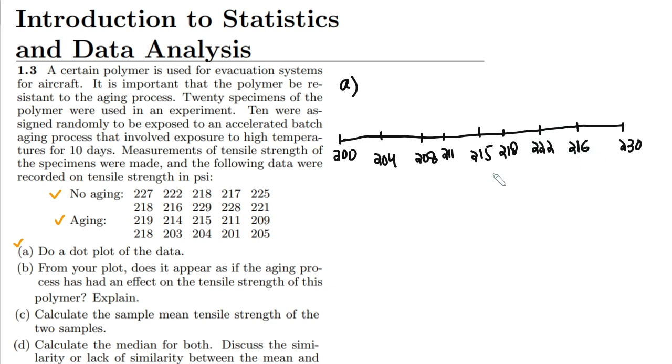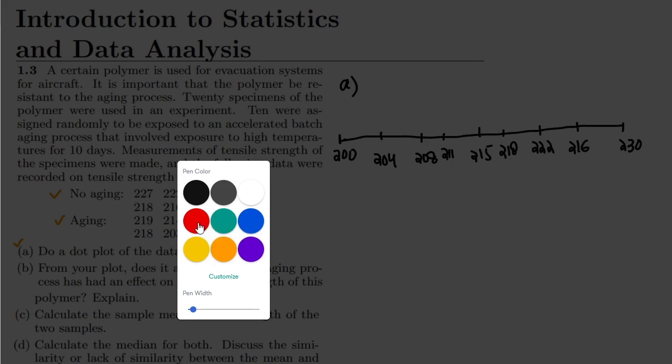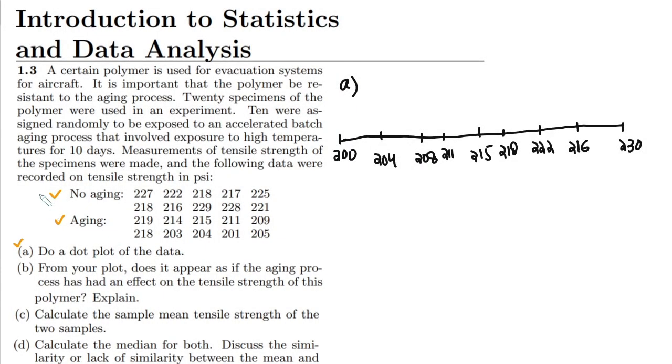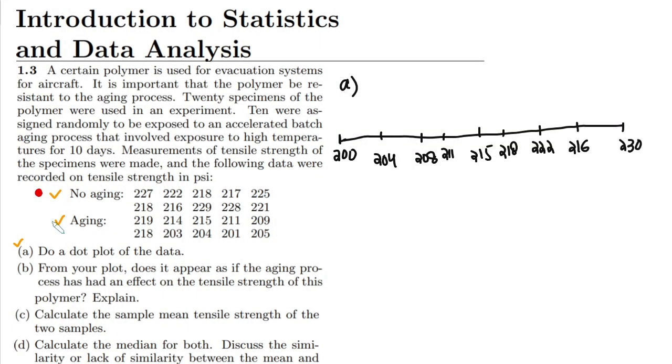These are different data ranges here. For plotting them, let me use different colors. For the non-aging I am going to use the red color, and for the aging I am going to use this one. This is cross and this is dot for them. The first data I am going to plot here is for the non-aging.